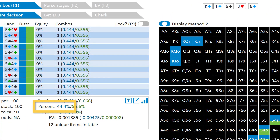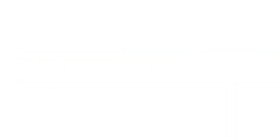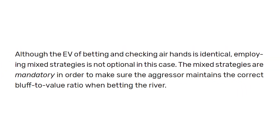This is the same as bluffing 20 divided by 45, or 44.4% of the time when holding a bluff. So that 44.4% mixed frequency from the solver output isn't weird or random — it's extremely deliberate. It makes sure that the bluff-to-value ratio of the bets remains perfectly balanced. Although the EV of betting and checking these air hands is identical — both are zero EV — employing mixed strategies is not optional. Mixed strategies are mandatory in order to make sure the aggressor maintains the correct bluff-to-value ratio when betting the river.